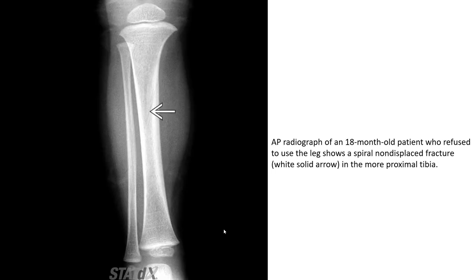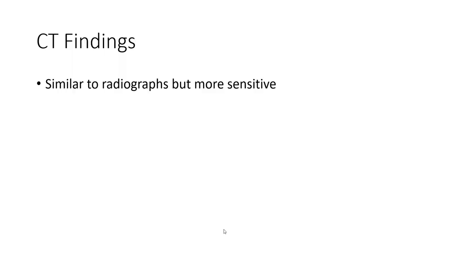AP radiograph of an 18-month-old patient who refused to use the leg shows a spiral non-displaced fracture, indicated by the solid arrow, in the more proximal tibia.